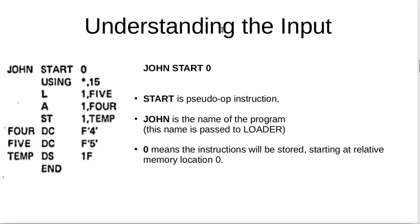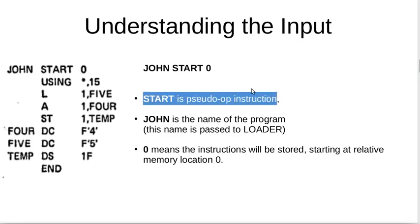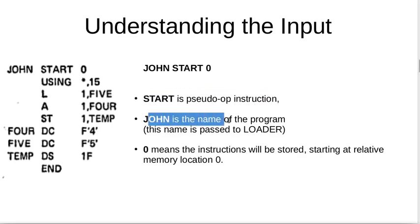Now, understanding the input: the figure on the left in the following slide gives us a series of instructions which form a program. The first instruction is 'JOHN START 0'. This instruction is provided as input to the assembler. The assembler will determine that START is a pseudo-op instruction — it denotes that the program is starting here. JOHN is the name that the user has given to the program, and this name is passed on to the loader.